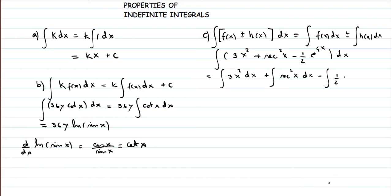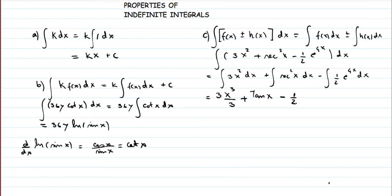The constant 1/2 comes outside. For 3x², we use the power rule: increase the power by 1 to get x³, divide by the new power 3, which gives x³. The integral of sec²(x) is tan(x).